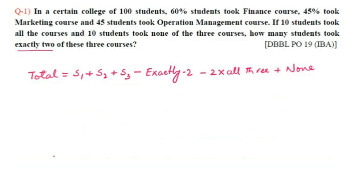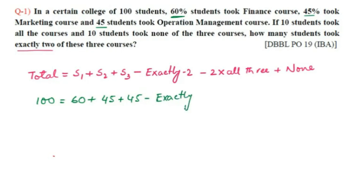Applying this formula: Total is 100. Set1 is 60 (Finance course). Set2 is 45 (Marketing, 45 percent of 100). Set3 is 45 (Operation Management). Then minus exactly two, minus 2 into all three — all three is 10 students, so that is 10.